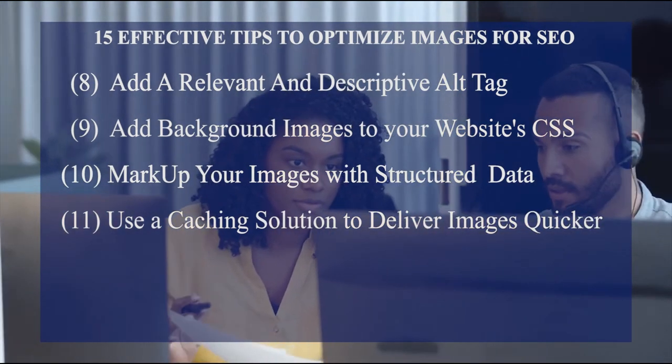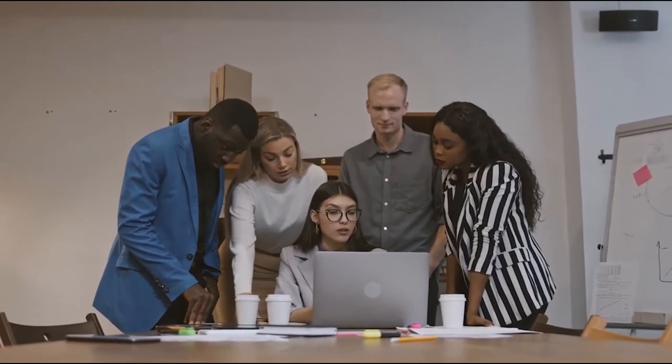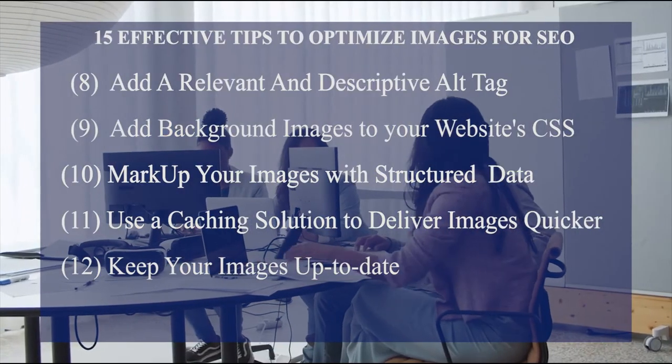Tip eleven: use a caching solution to deliver images quicker. Storing copies of your website images on a nearby server is called a caching solution. Tools like Cloudflare, CloudFront, and Varnish are caching solutions that can improve your image SEO and website loading speed. To use one, add a few lines of code to your website, and the caching solution will automatically store copies of your images on the cloud.